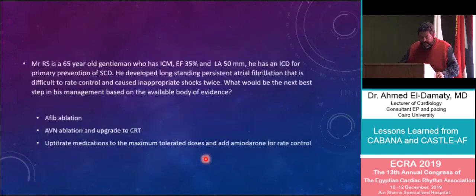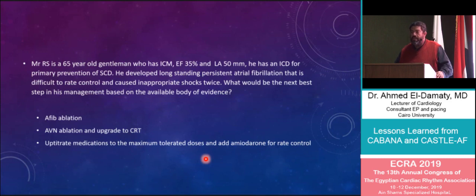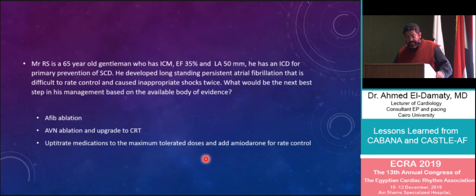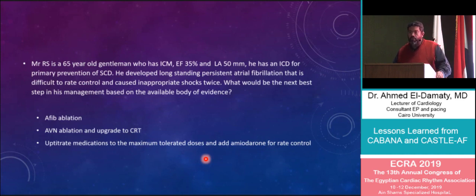Consider this case scenario: Mr. RS is a 65-year-old gentleman with ischemic cardiomyopathy, an ejection fraction of 35%, and a left atrial diameter of 50 mm. He has an ICD for primary prevention of sudden cardiac death. He developed long-standing persistent atrial fibrillation that is difficult to rate control and caused inappropriate shocks twice. The question is: do we go for AF ablation, AV node ablation with CRT upgrade, or up-titrate medications with amiodarone for rate control?